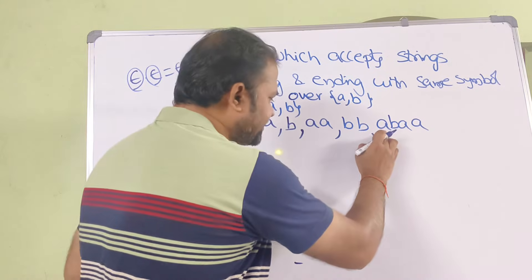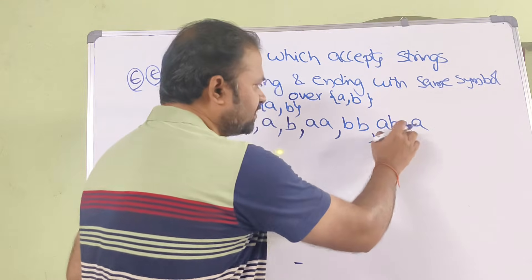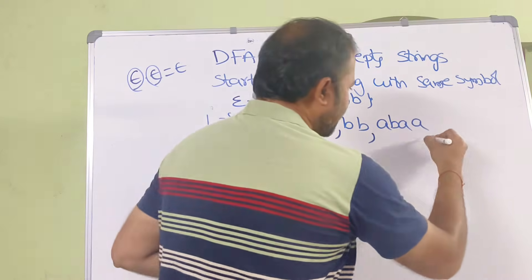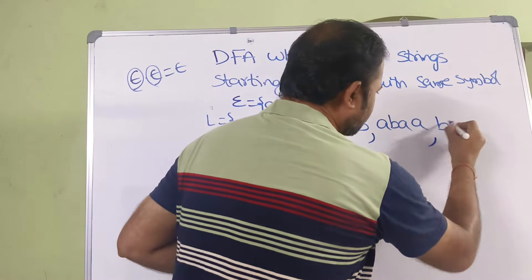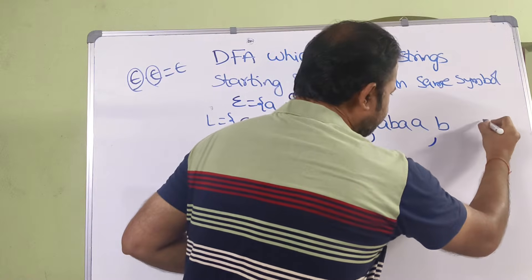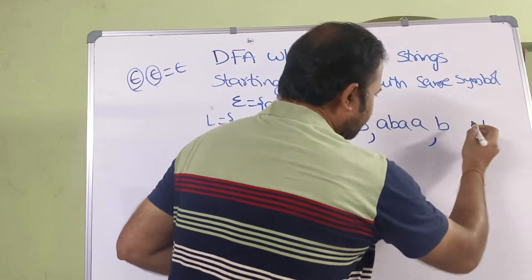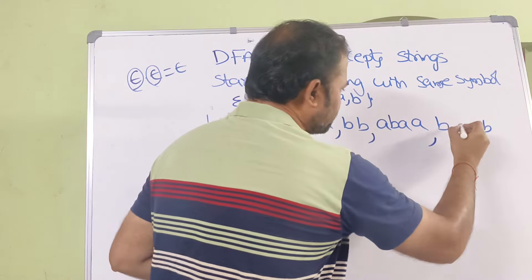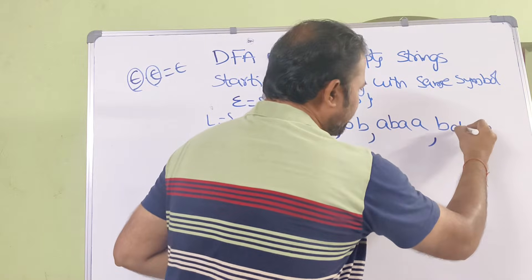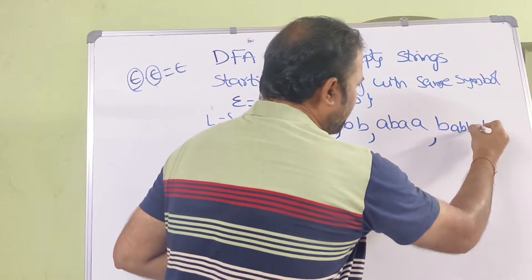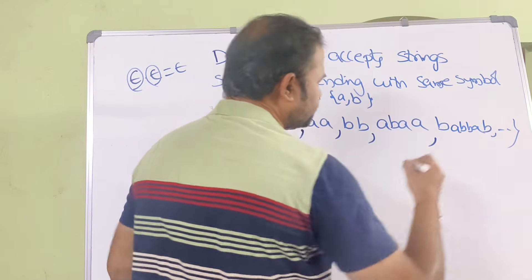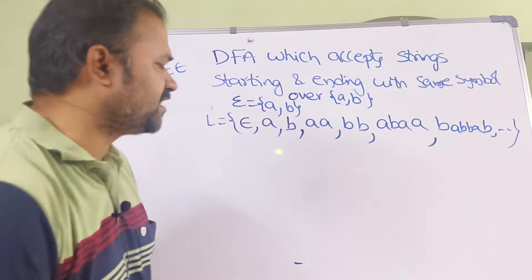So a valid string starts and ends with A, with any number of A's and B's in between. Likewise, a valid string can start and end with B, again with any number of A's and B's in between — there is no constraint on the middle portion.